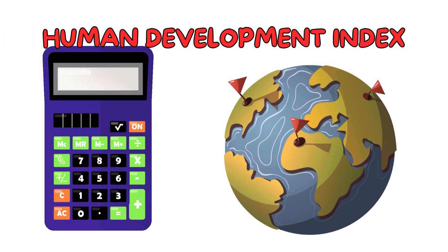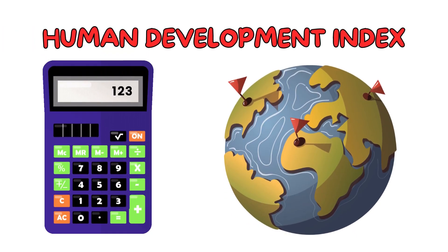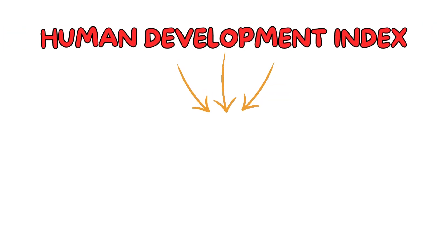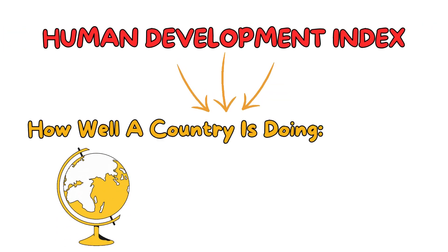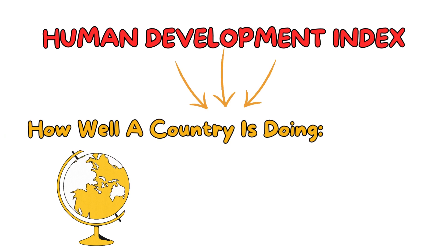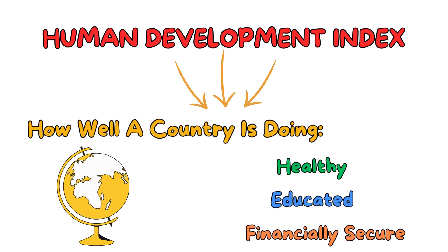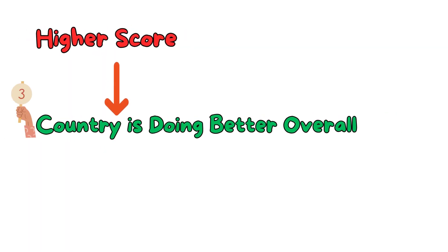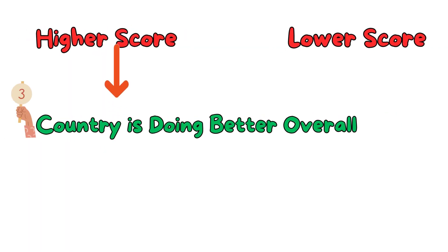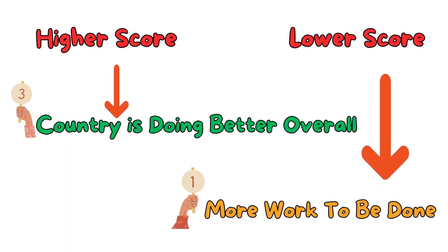So the human development index is like adding up these grades to give the country an overall score. This score helps us understand how well a country is doing in terms of how healthy, educated, and financially secure its people are. Higher scores mean the country is doing better overall, and lower scores mean there's more work to be done.